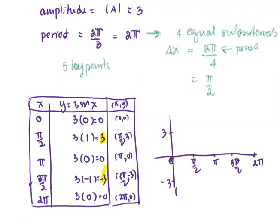The first one is at (0, 0), the next one is (π/2, 3), next is (π, 0), the fourth one is (3π/2, -3), and the last is (2π, 0). And then connect all five points with a smooth curve with the shape of the sine function.